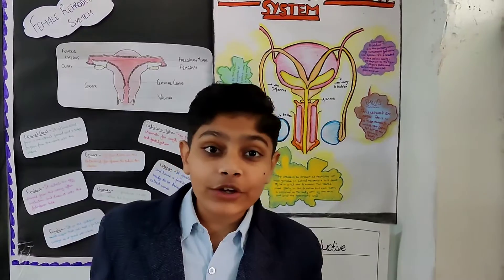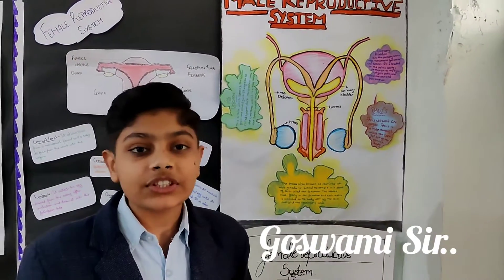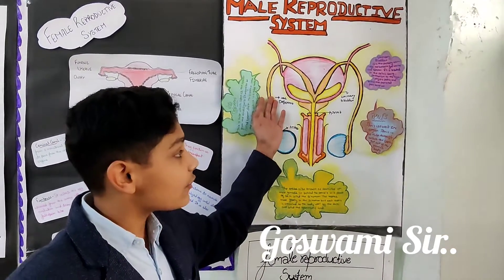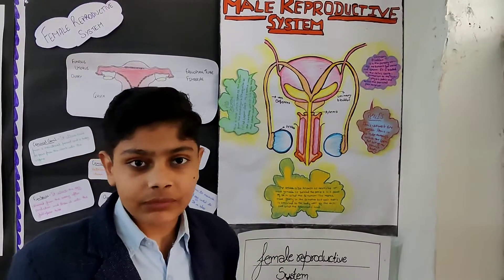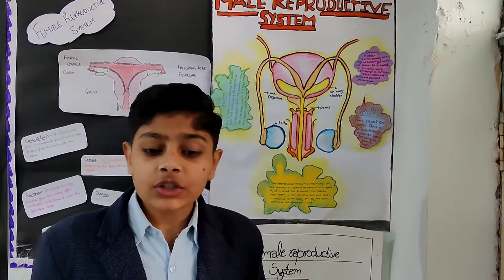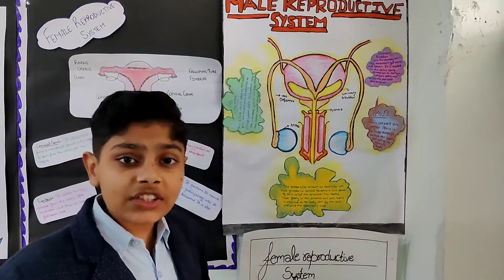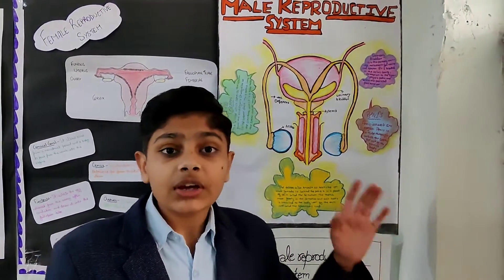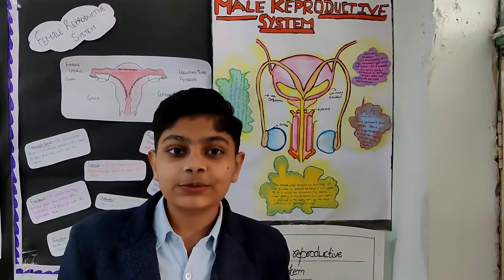The male reproductive system consists of testes, vas deferens, urinary bladder, and penis. The testes are the male reproductive organs where sperm are produced. Each sperm leaves the testes through a tube called the vas deferens and exits the male body through the penis.